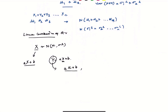However, when you add a constant to a variable, it doesn't get added into the variance — only the factor you multiply by affects it. So if x has variance sigma square and y = ax + b, then the variance of y is just a squared times sigma square. The b doesn't count.